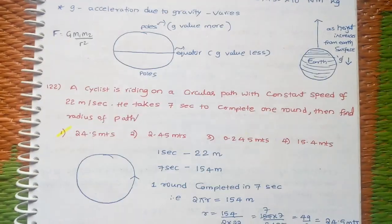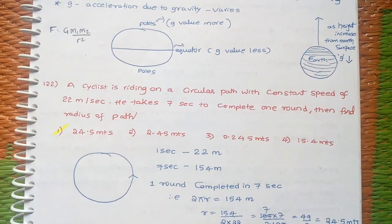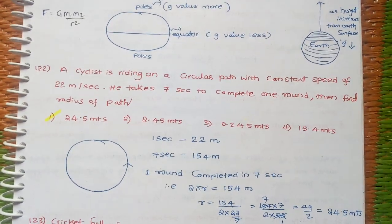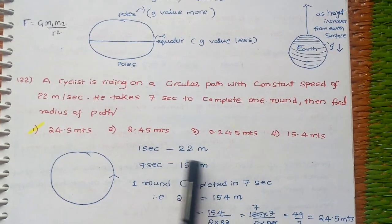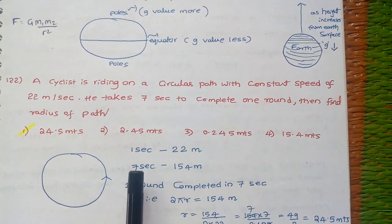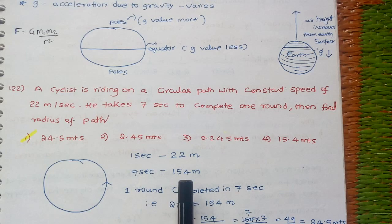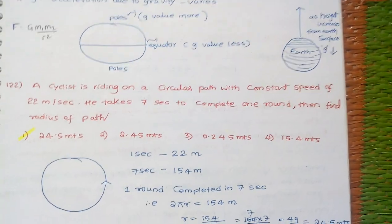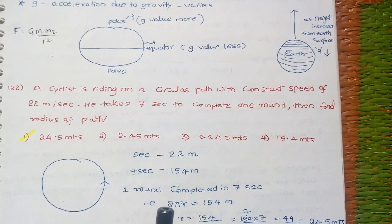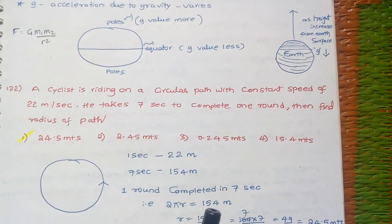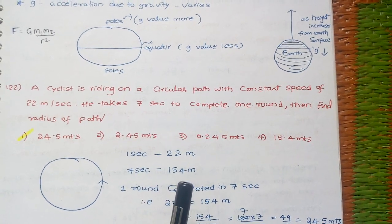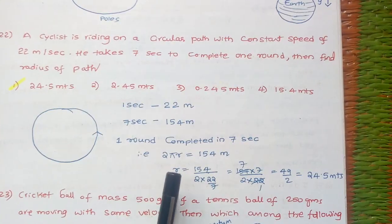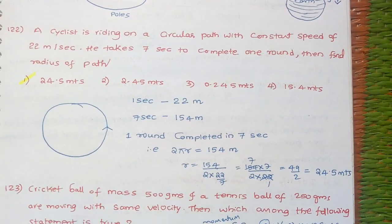Next, a cyclist is riding on a circular path with constant speed 22 meters per second. He takes 7 seconds to complete one round. Then find the radius of the path. In 1 second he covers 22 meters. In 7 seconds, the circumference 2πr equals 154 meters. Calculating the radius, we get 24.5 meters. Option A.